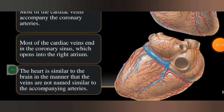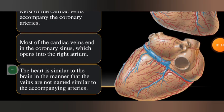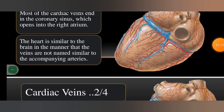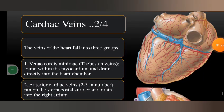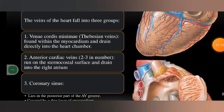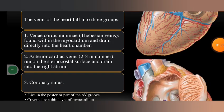Most of the cardiac veins accompany the coronary arteries, and most drain into the coronary sinus, which opens into the right atrium. The heart is similar to the brain in that the veins are not always similar to the accompanying arteries. The veins of the heart fall into three groups: first, vena cordis minimi; second, anterior cardiac veins; and third, the coronary sinus.